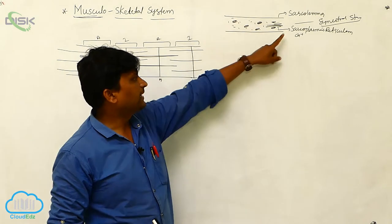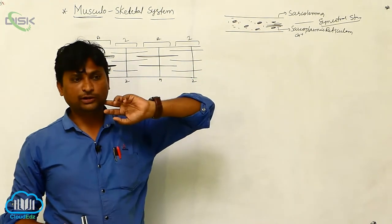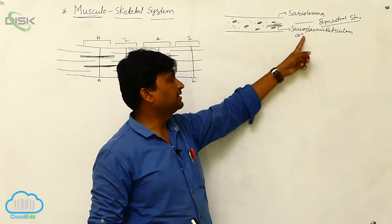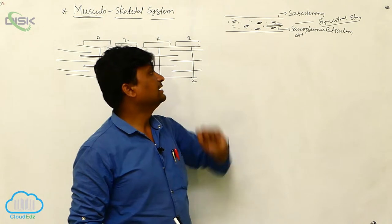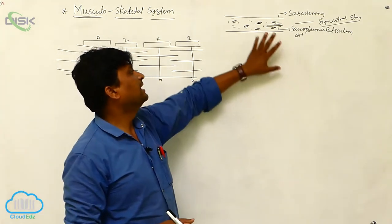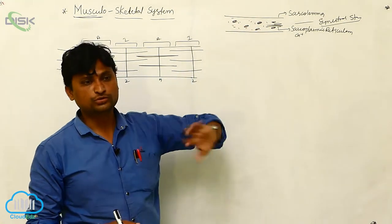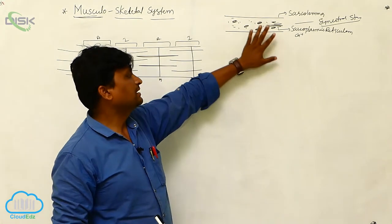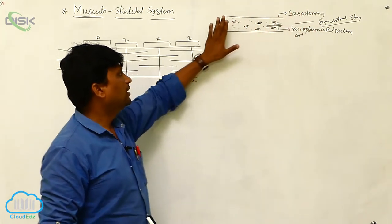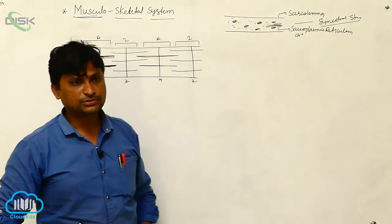In this muscle we have endoplasmic reticulum, which we call sarcoplasmic reticulum. The sarcoplasmic reticulum supplies calcium ions to the muscles, which assists in muscle contraction. There are also many mitochondria, which we call sarcosome. The sarcoplasmic reticulum, sarcosome, and sarcolemma all make up the internal parts of the muscle.